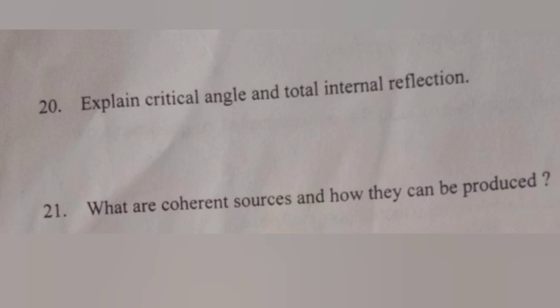Question 20. Explain critical angle and total internal reflection. Answer: The angle of incidence in the denser medium when angle of refraction is 90 degree is called the critical angle. Total internal reflection: When light enters rarer medium from denser medium, if angle of incidence is greater than critical angle, light reflects back into the same medium.